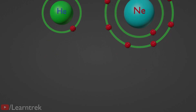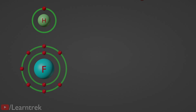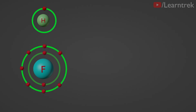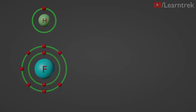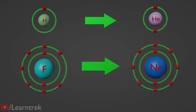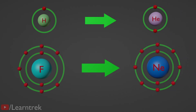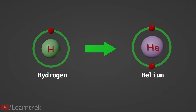The elements that don't have a completely filled outermost shell are reactive, and they want to achieve a completely filled outermost shell to become stable, like their nearest noble gases. For example, hydrogen wants to achieve the same electronic configuration as that of its nearest noble gas, helium.